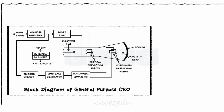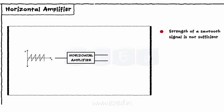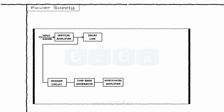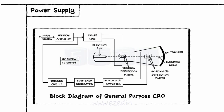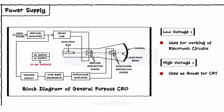The last block is a horizontal amplifier. The strength of the sawtooth signal available at the output of the time base generator is not sufficient. Thus, before applying it to the horizontal plates, the signal is amplified using a horizontal amplifier. Every instrument needs a power supply for it to work. The power supply section of a CRO generates two levels of DC voltage. A low voltage is used for the working of electronic circuits and a high voltage level is used as the anode for CRT. The high voltage generated is of the order of 1000 to 1500 volts.